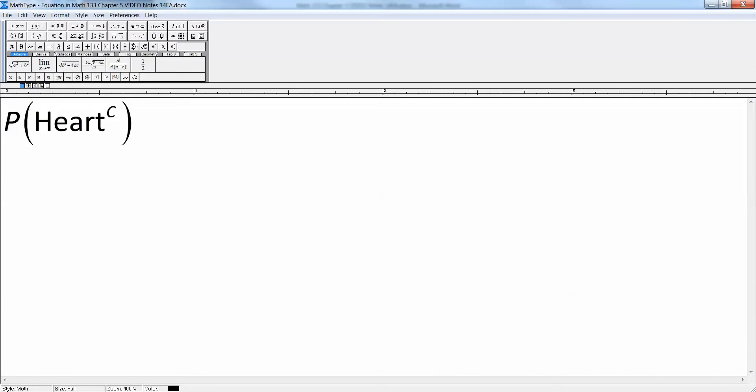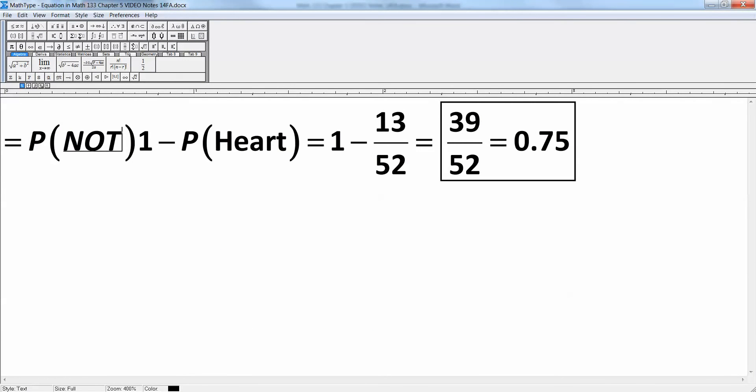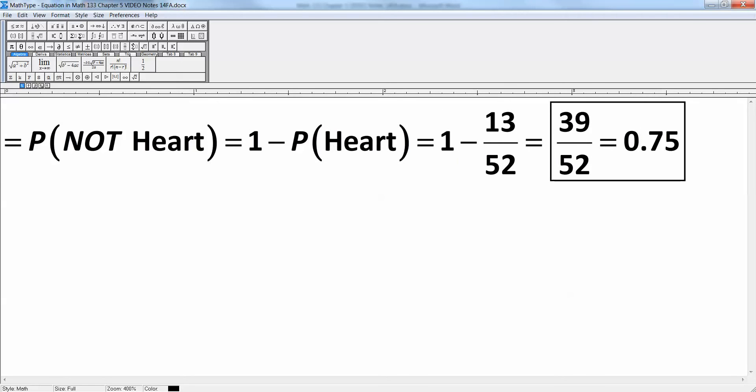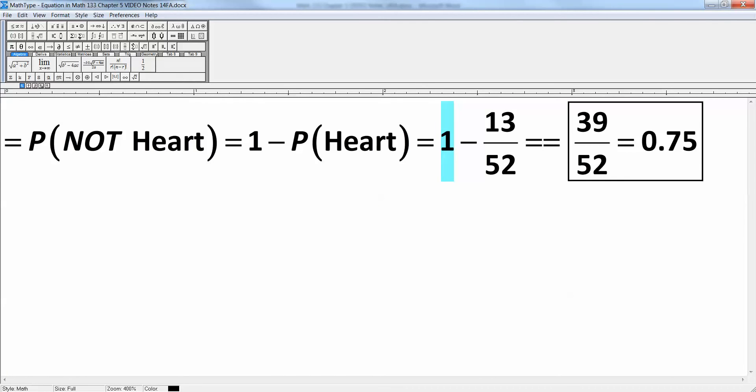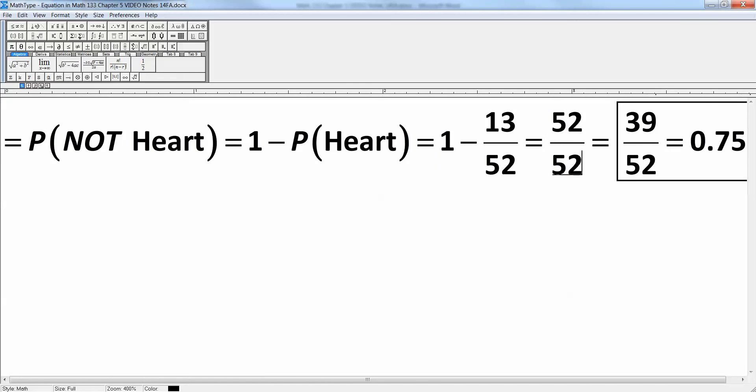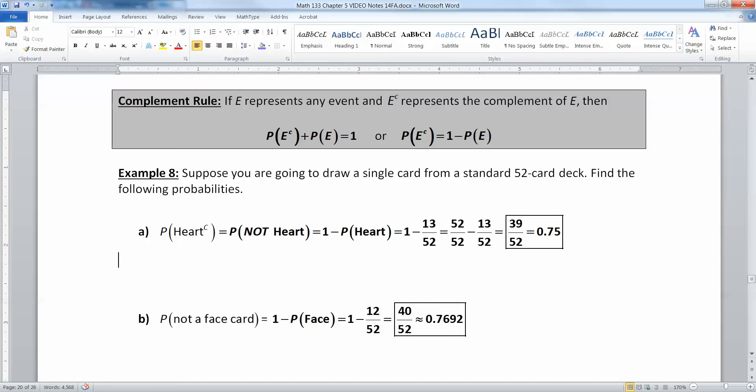So let's look at hearts. If you want the probability of heart complement, what you want is the probability of not getting a heart. That's 1 minus the probability of a heart. That would be 1 minus, now hearts, there's 13 hearts out of 52 in a deck, so that's 1 minus 13 out of 52. So if you have 1, 1 is technically 52 over 52. What I'm really doing is 52 over 52 take away 13 over 52. I need to take 52 take away 13, and I get 39. So that's 39 out of 52.